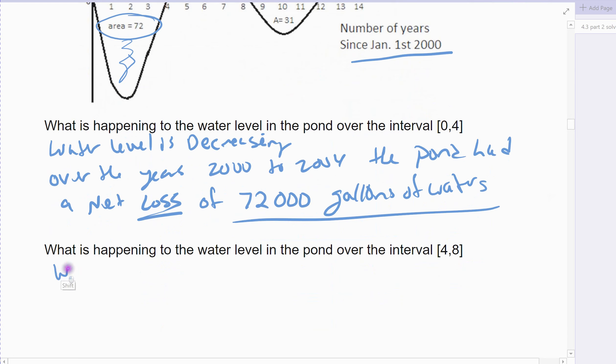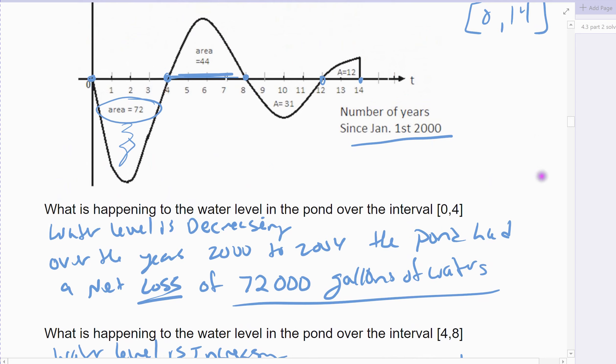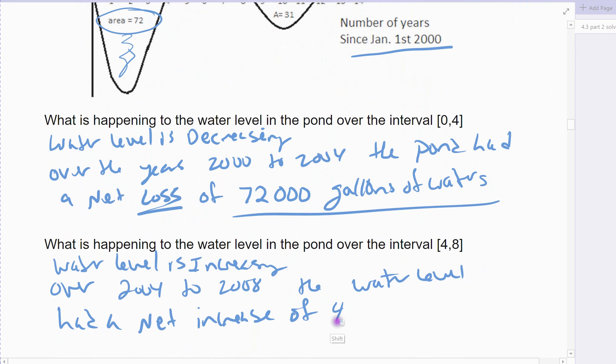So the water level is increasing over 4 to 8. And so that means over 2004 to 2008, the water level had a net increase or gain of whatever that area was. 44, remember, 1,000 gallons, 44,000 gallons of water.